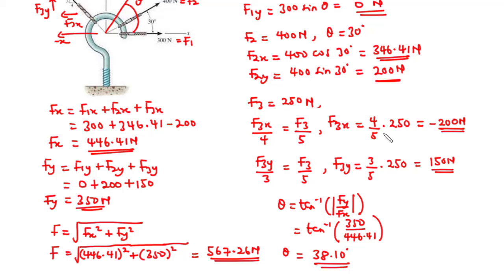Note that F3x should be negative: F3x = −(4/5) × 250 = −200 N.